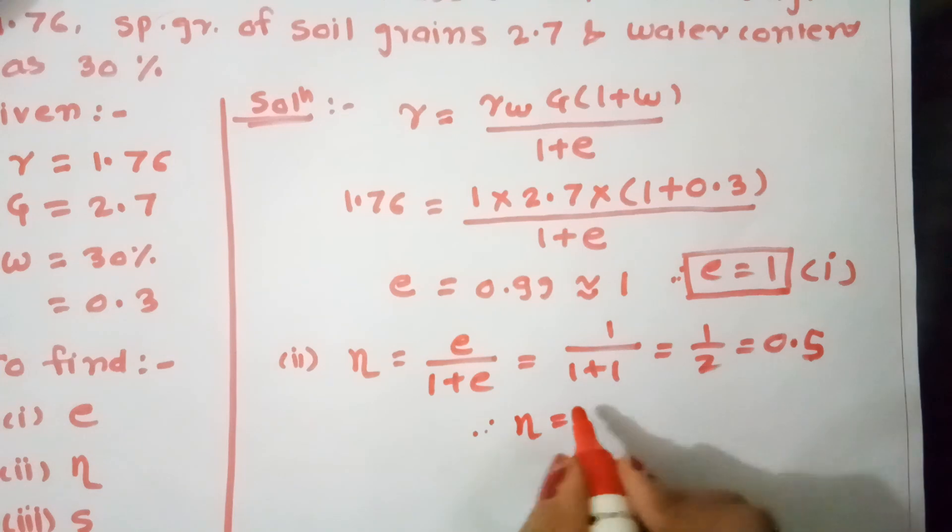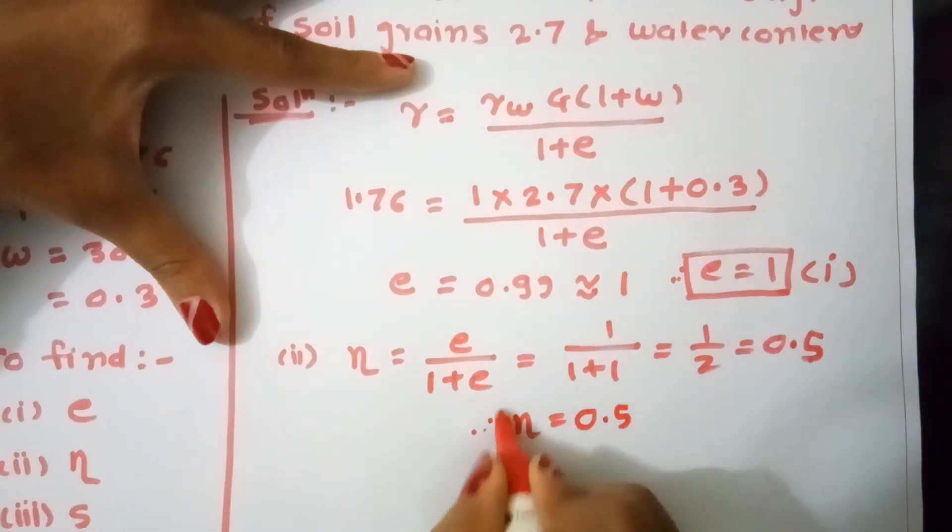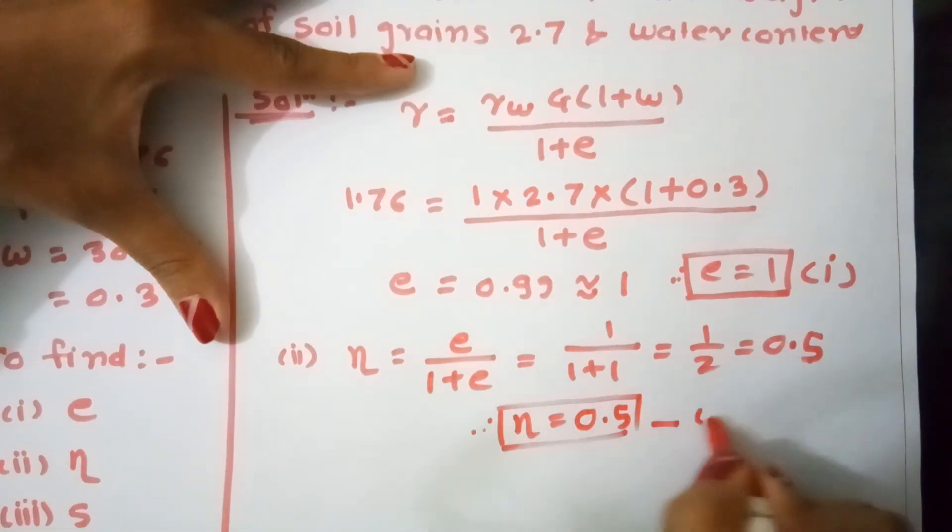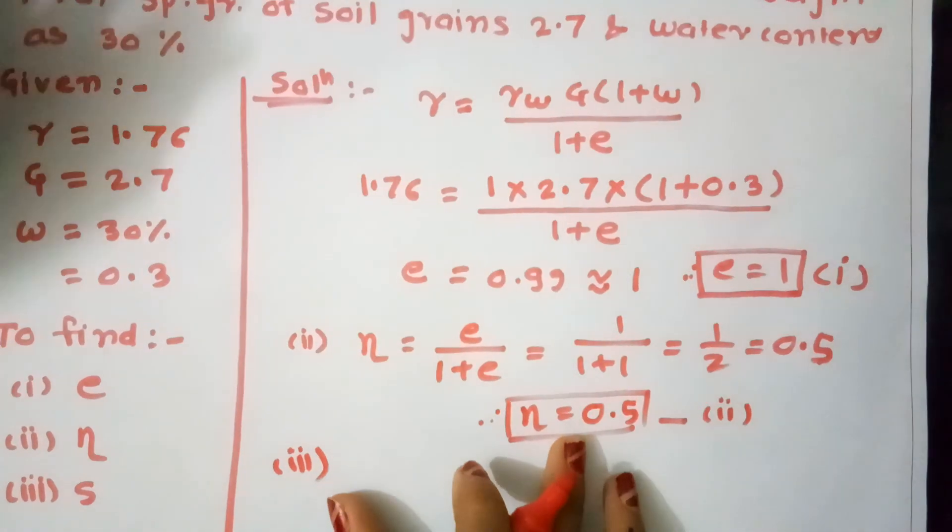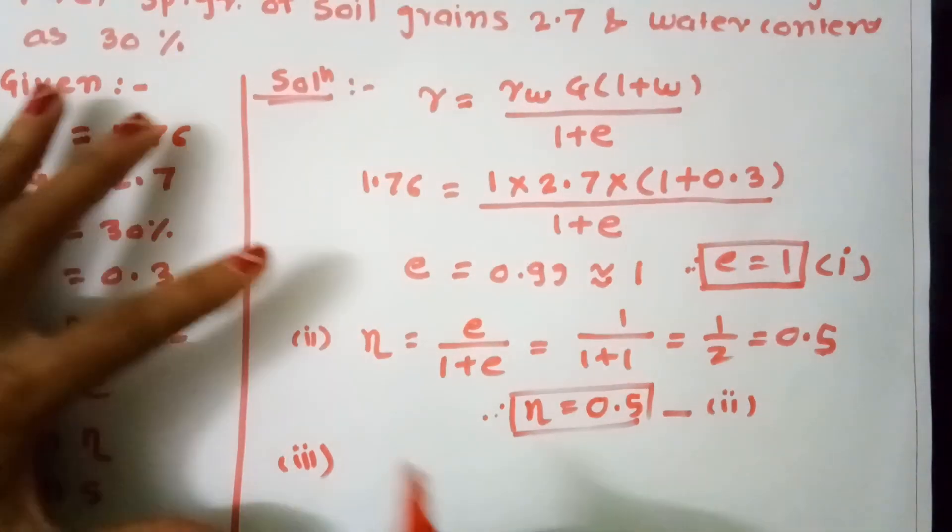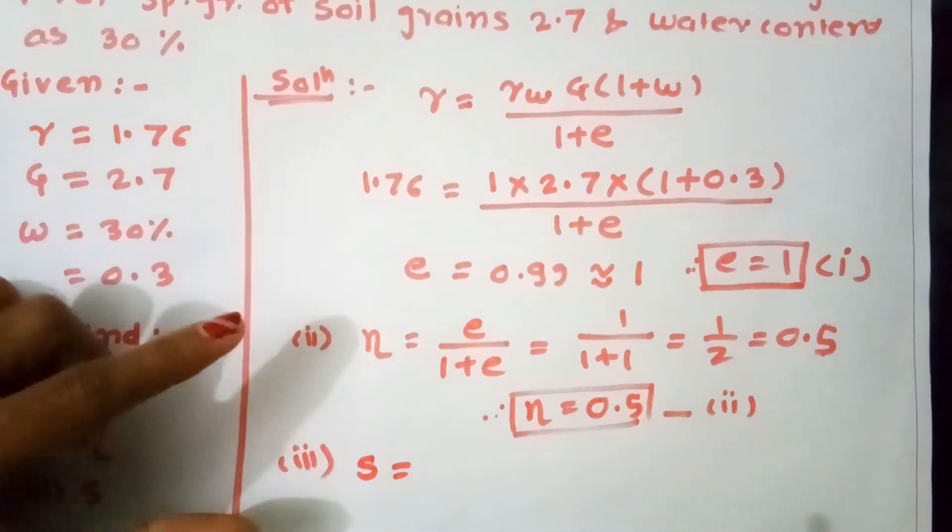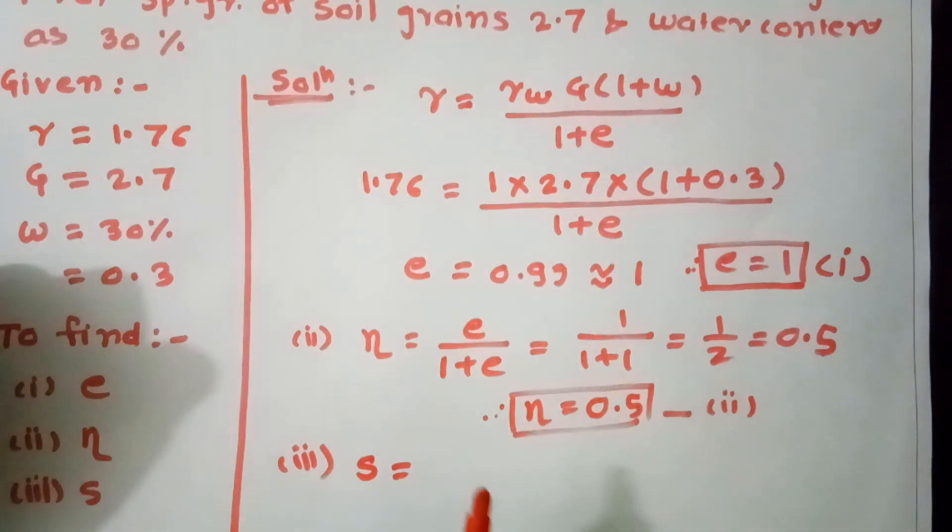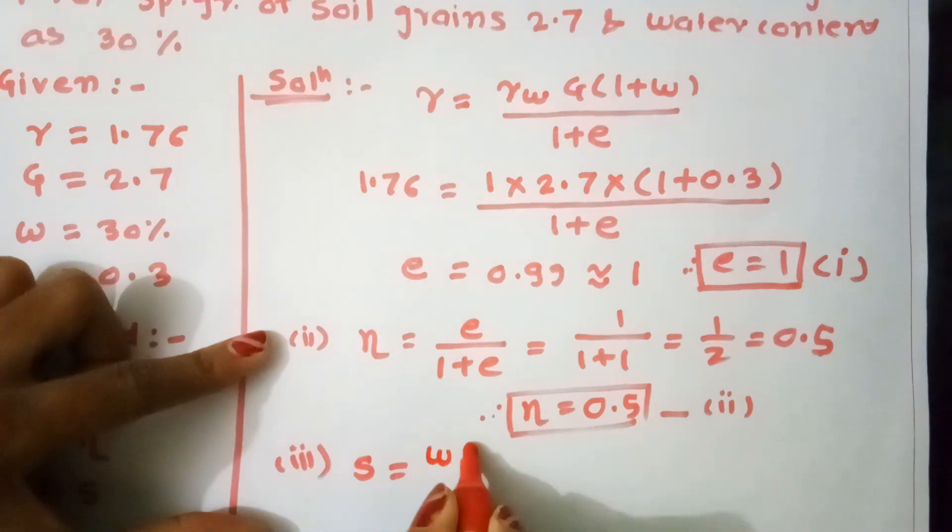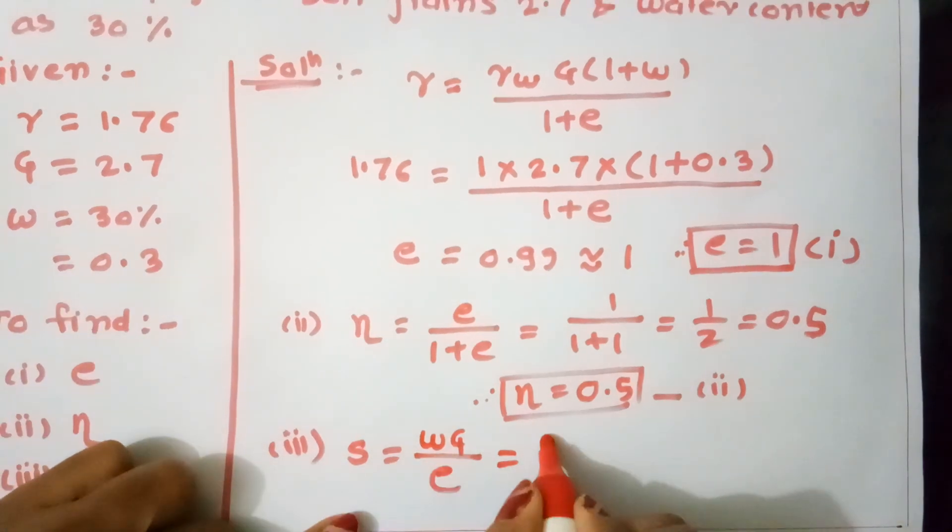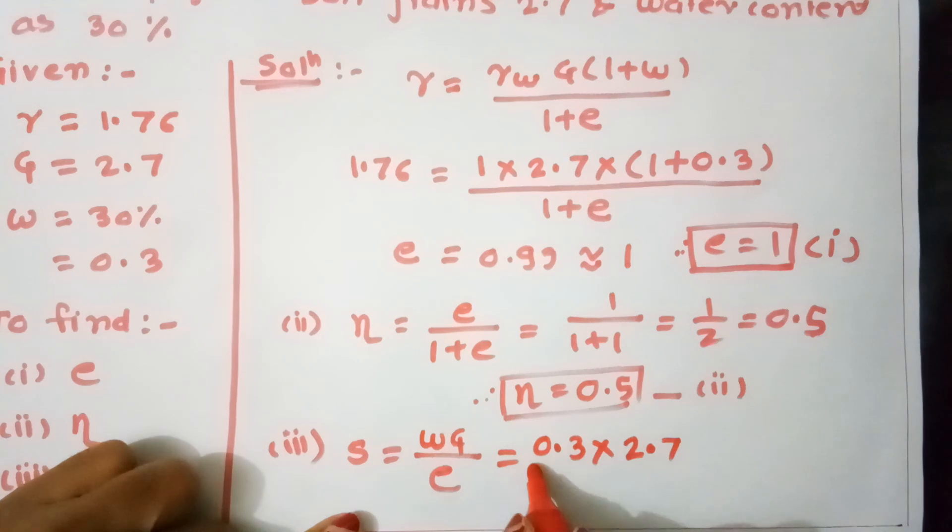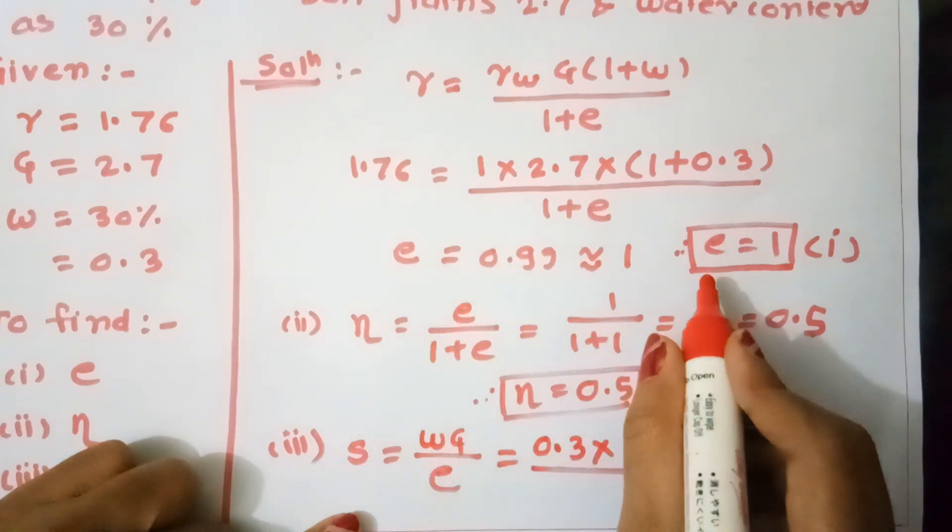Third, degree of saturation S. We have the relation S = wG/e. We know w = 0.3 (water content), G = 2.7 (specific gravity), and e = 1 (void ratio).